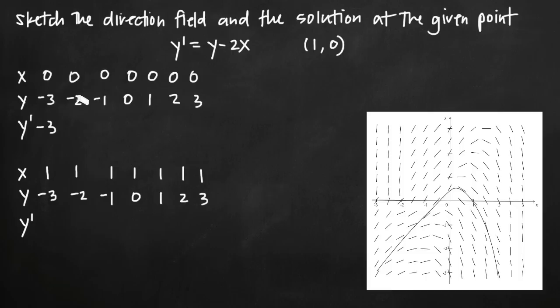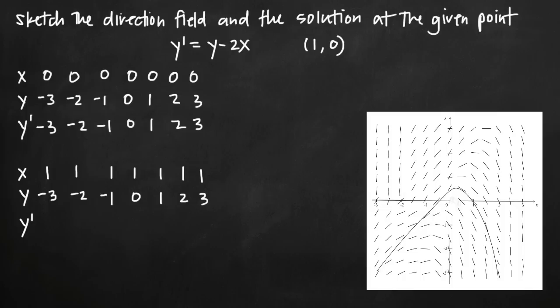Then negative two minus two times zero is just negative two. Since the x value is always zero, the second term goes away leaving us just with the y term. So we get negative one, zero, one, two, and three — values that match our y value. Once we have values for y prime we can plot little lines representing the slope at each coordinate point. At the point (0, -3) our slope is negative three, so we draw a line with slope negative three through that point, building the direction field gradually.